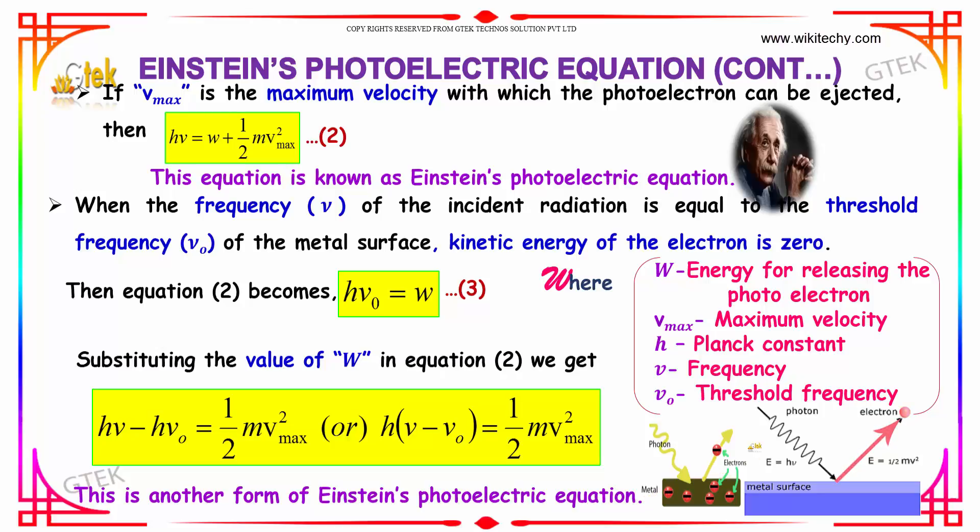You are able to see a photon of E is equal to h nu is ejecting an electron with the kinetic energy of mv square on the metal surface.